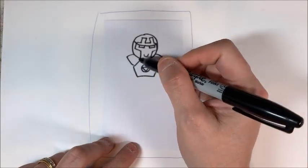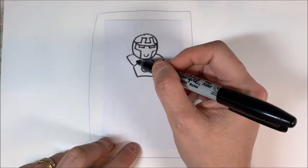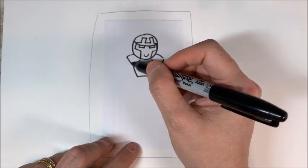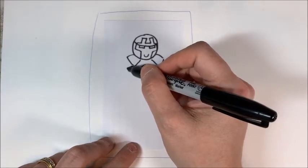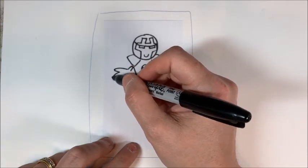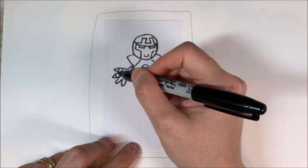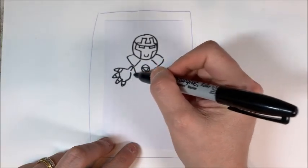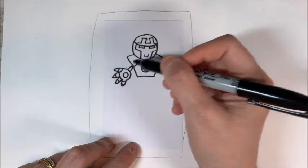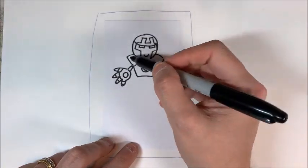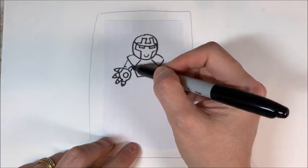Now we're going to do one of those foreshortened hands just like we did for Black Panther. So we have the thumb, four fingers coming out there. His fingers are all articulated and he has a repulsor in the middle. Now we can kind of connect to here.